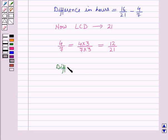So now, the difference in hours will be equal to 16 by 21 minus 12 by 21.